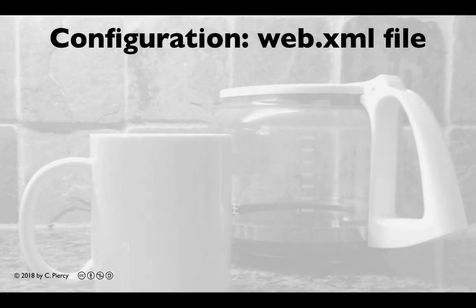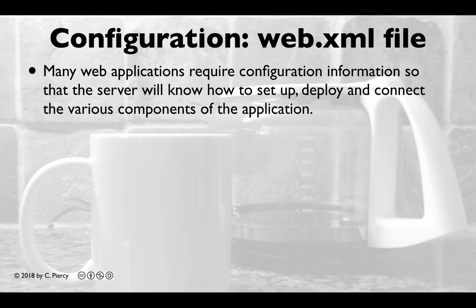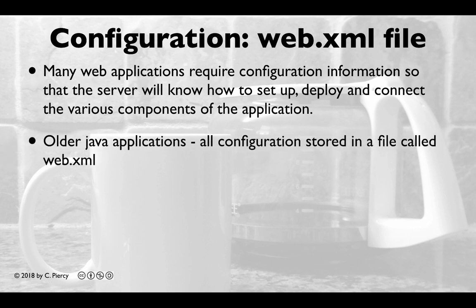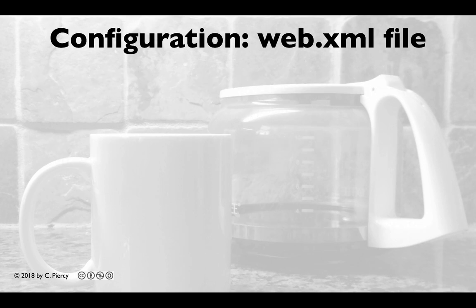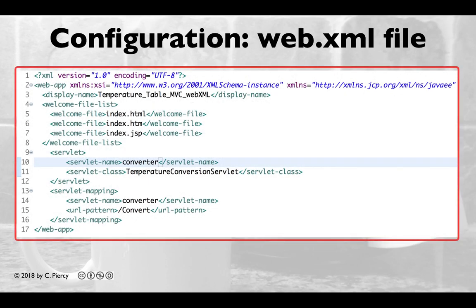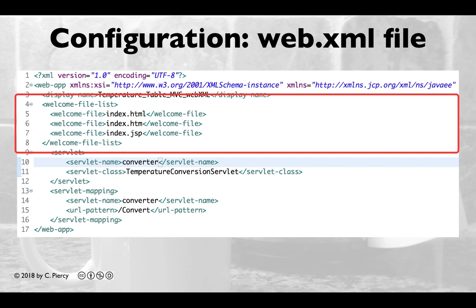Many web applications require configuration information so that the server will know how to set up, deploy, and connect the various components of the application. With older Java applications, all configuration information is stored in a file called web.xml. The web.xml file is also referred to as the deployment descriptor. The web.xml file must reside in the WEB-INF directory. You can find this directory in the web content folder of your Eclipse projects. Here is an example of a web.xml file for a simple application — this one does not require a lot of configuration. We see a section which defines the welcome file. The welcome file list defines the file names that can be used to indicate which file should run when the application starts.